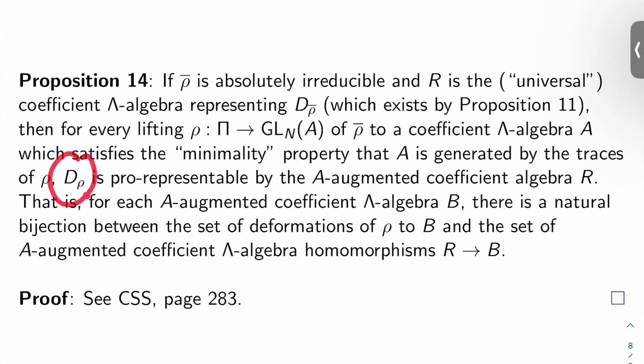Then D sub rho is pro-representable by the A augmented coefficient algebra R. So what I mean by that is for each A augmented coefficient lambda algebra B, there's a natural bijection between the set of deformations of rho to B and the set of A augmented coefficient lambda algebra homomorphisms from R to B. So in other words, R has the correct universal property that it commutes all the lifting triangles that we want it to.